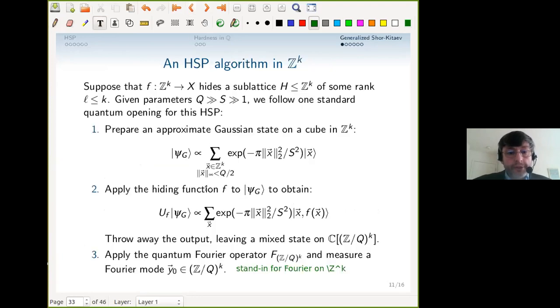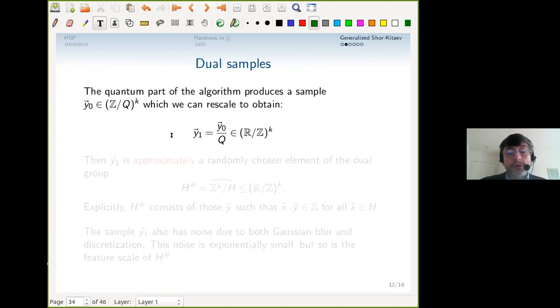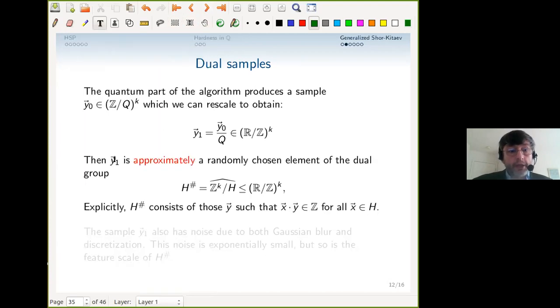So what do you get from this standard opening? You get a dual sample in the following sense: if you rescale the measured Fourier mode by dividing by Q, you get a sample y_1, and it's an element of this dual torus—what in physics is called a crystal momentum—R mod Z^k. Given the fact that there's a hidden subgroup and evaluating f gives us a partial measurement, this measured thing y_1 is approximately a randomly chosen element of a certain dual group H^♯.